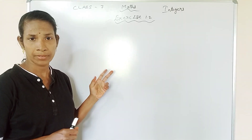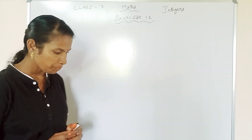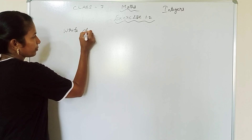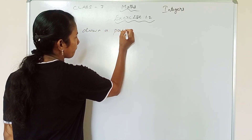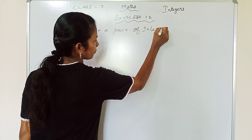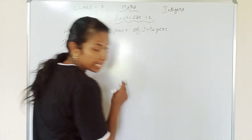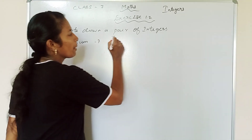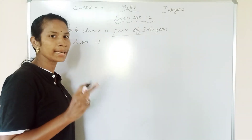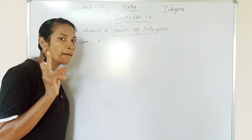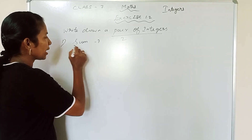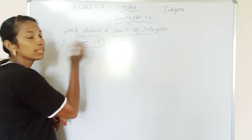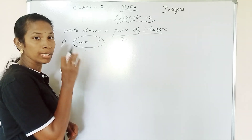So the first video is Class 7 Math, Exercise 1.2. The first question: write down your pair of integers. What is the pair of integers? A pair means two numbers — 2 Jodi — that's 2 numbers. So what do we need to do with those numbers? The two numbers should be equal to some sum, and the answer is minus 7. This is the question — what do we need to do with those integers?